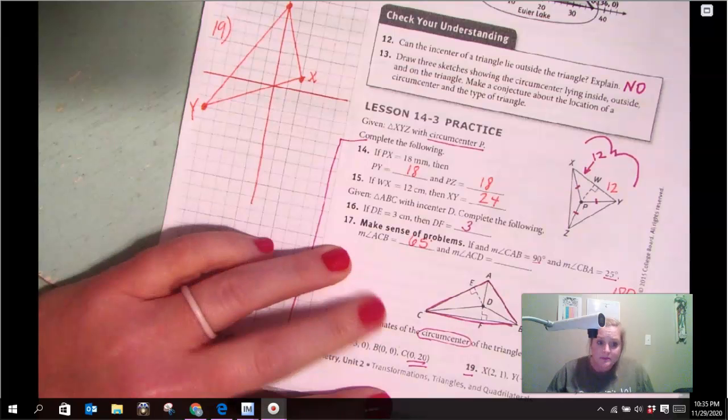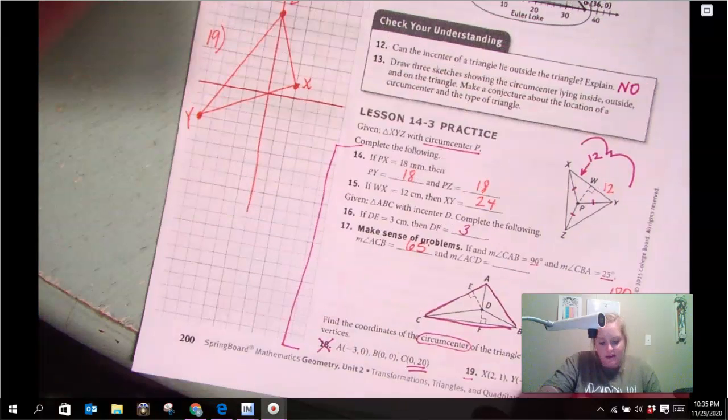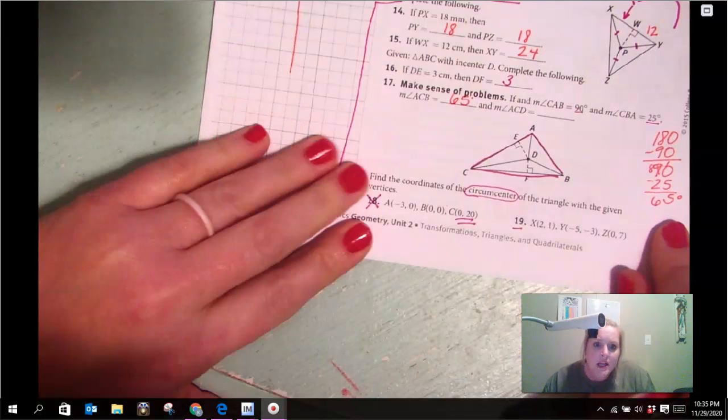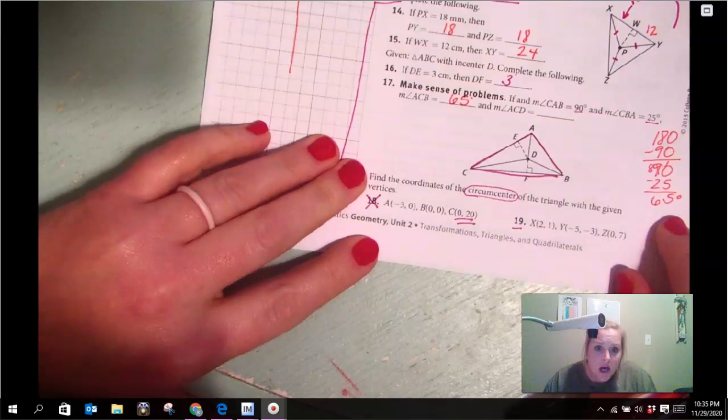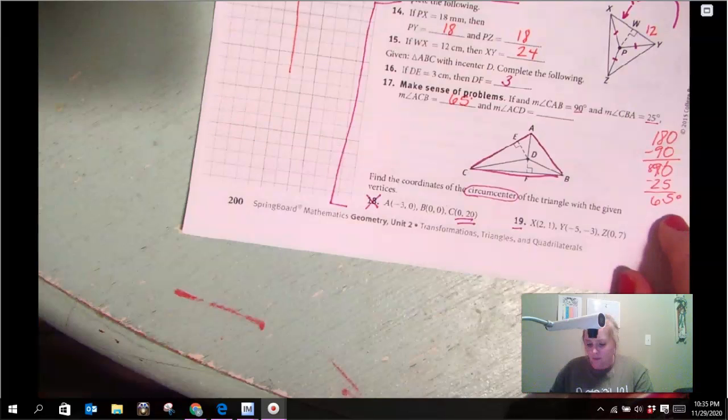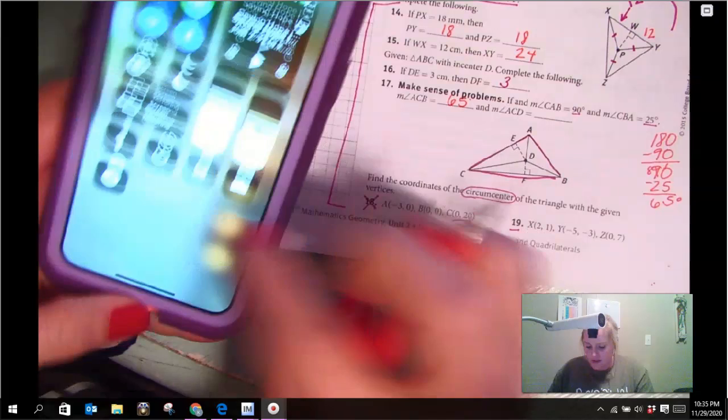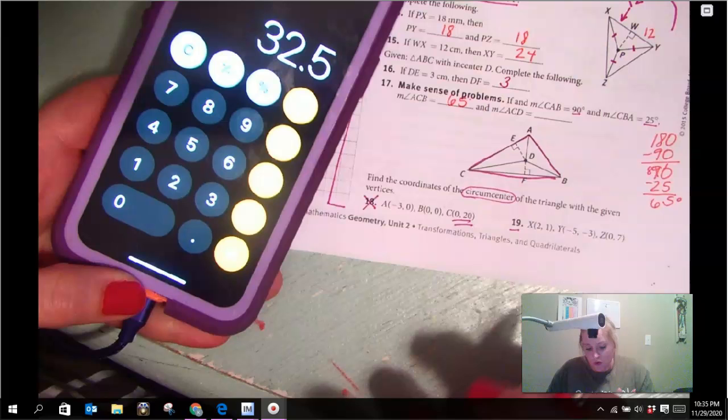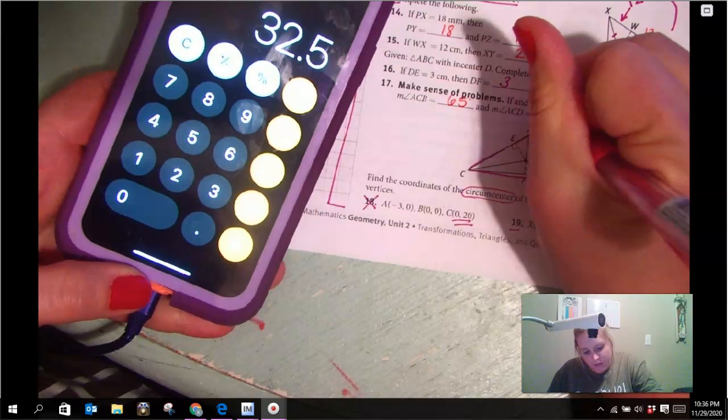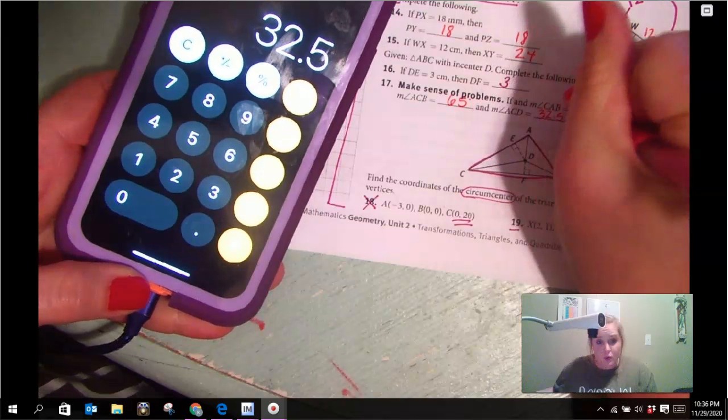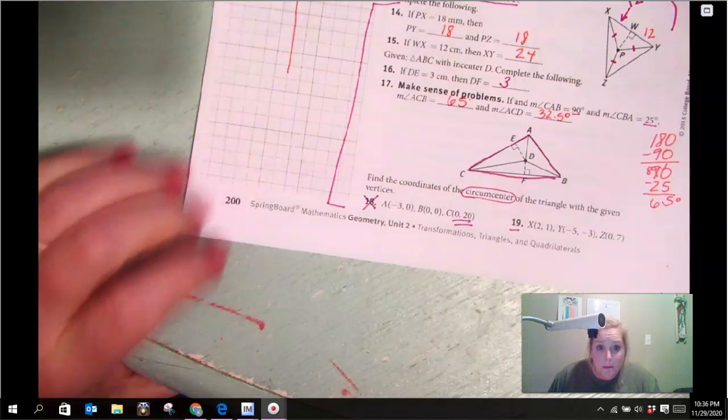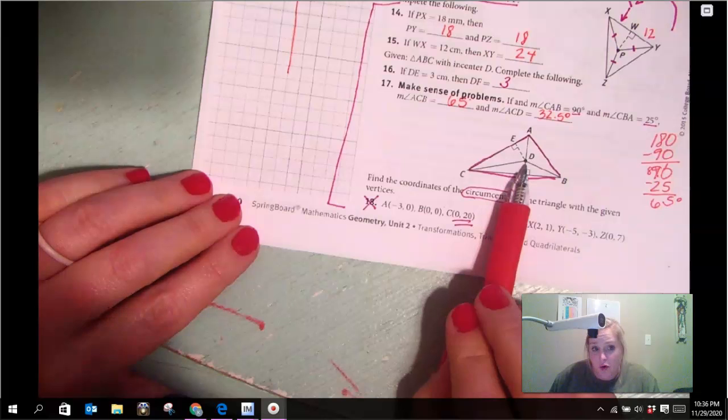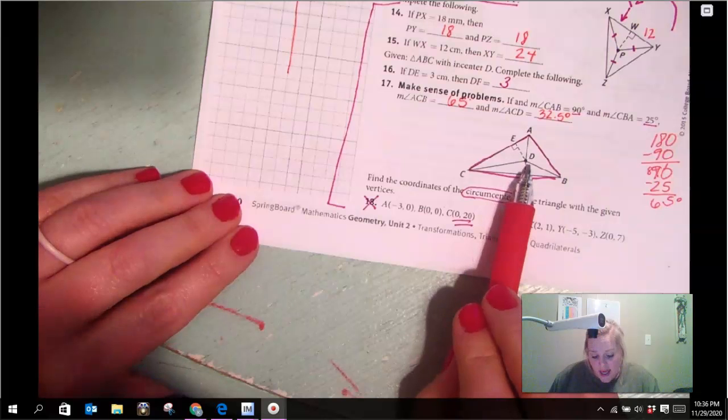And then, I guess you couldn't see that math. Sorry. Yeah, 65 degrees. And then we're going to take that 65, and we're going to cut that in half. 65 divided by 2 is going to give me 32.5 because it's going to be an angle bisector. This one down here is an in-center, which is an angle bisector, which cuts the angle in half.